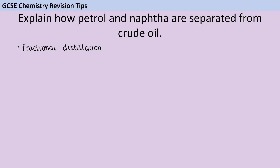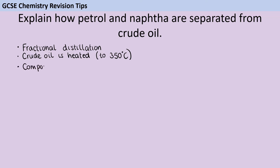Whatever the length of the question, you've almost certainly started with the fact that the crude oil needs to be heated — you may even have specified around 350 to 400 degrees C. When that happens, all of those liquid hydrocarbons are going to evaporate. You might refer to those as hydrocarbons, compounds, or molecules — any of those would be fine. After they've evaporated and turned into vapors, the vapors enter something called a fractionating column.